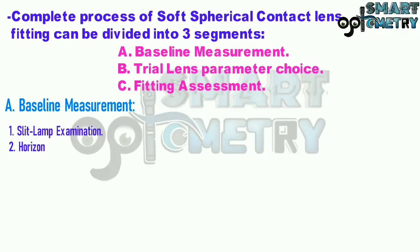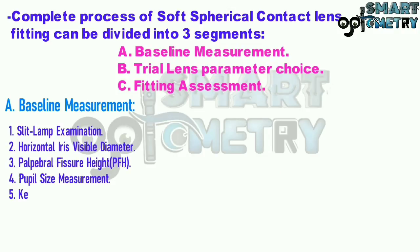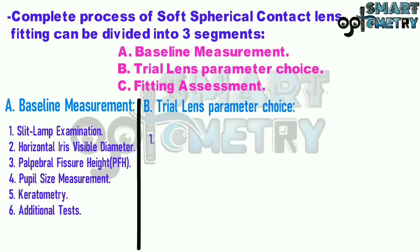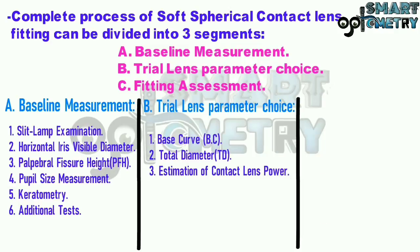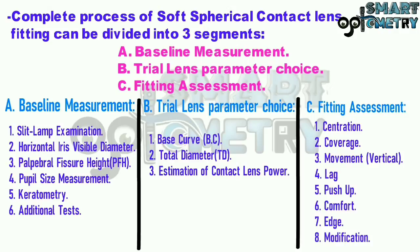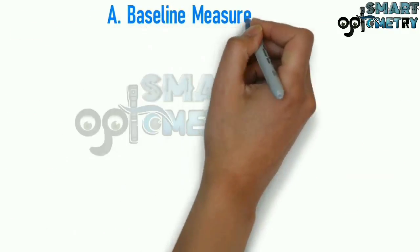In baseline measurement we will discuss: 1) slit lamp, 2) horizontal visible iris diameter, 3) palpebral fissure height, 4) pupil size measurement, 5) keratometry, and 6) additional tests. In trial lens parameter choice we will discuss: 1) base curve, 2) total diameter, and 3) estimation of contact lens power. In fitting assessment we will cover: 1) centration, 2) coverage, 3) movement, 4) lag, 5) push-up, 6) comfort, 7) edge, and 8) modification.